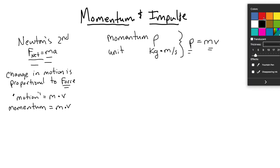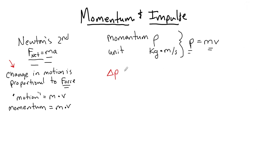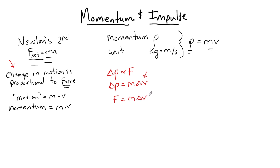What we're really interested in is the change in momentum — delta p — because that's what Newton was interested in too. He said the change in p is proportional to the force applied to an object. To change delta p, we change an object's velocity, since we don't really change its mass. So we say the change in momentum equals m times delta v.